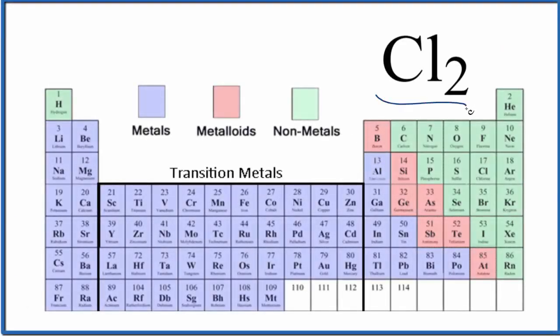Let's write the name for Cl2. On the periodic table, we find chlorine right here. It's a nonmetal, so we have two nonmetals together. This is a molecular compound, which means that electrons are shared between these two chlorine atoms that are bonded together.